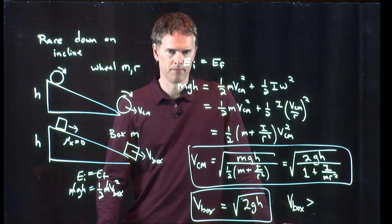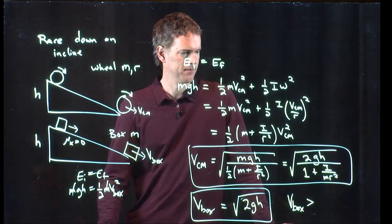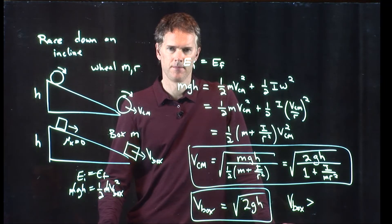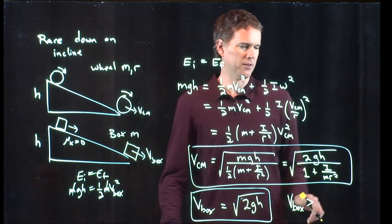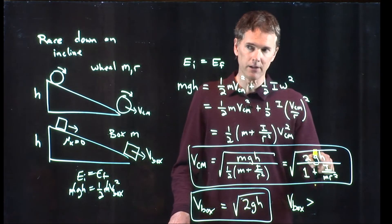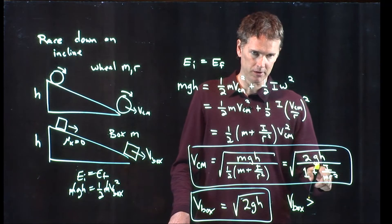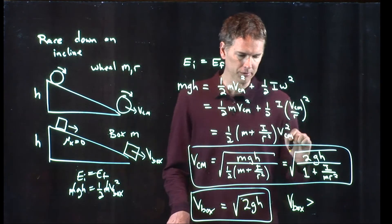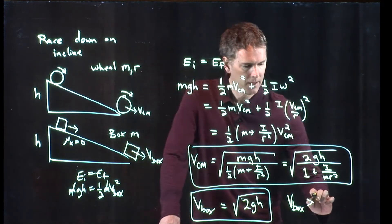Because they're both square root 2gh, but you're dividing the velocity of the wheel by 1 plus I over mr squared. That's right. If this is a positive number down here, which it is, I is always a positive number, m is always a positive number, r squared is of course always a positive number.